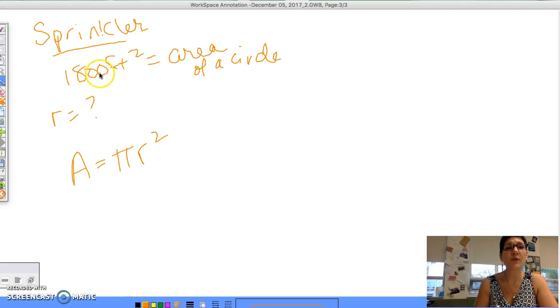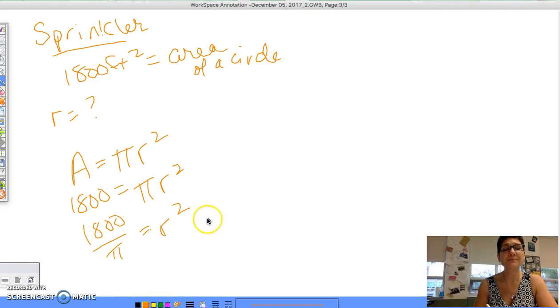So now you're looking for the radius. I told you what the area is, so you're just going to plug that in: 1800 = π × r². So if I'm going to do this, I'm going to divide both sides by π. Don't do anything with your calculators yet. 1800/π = r².